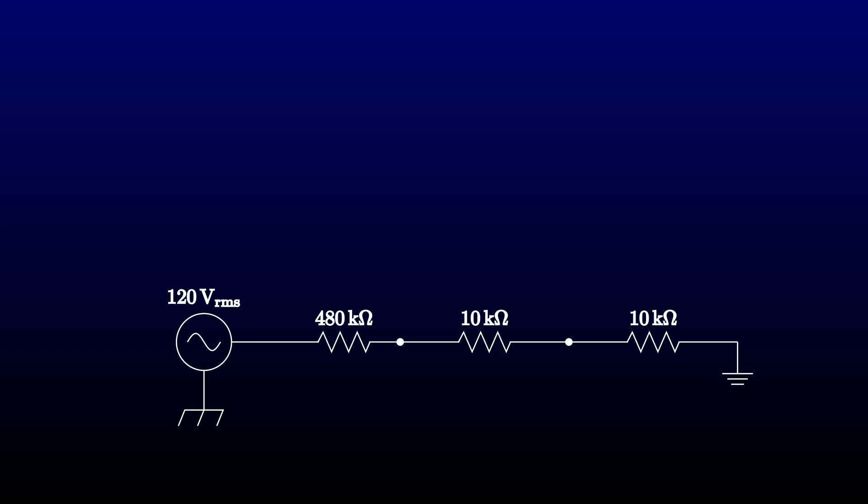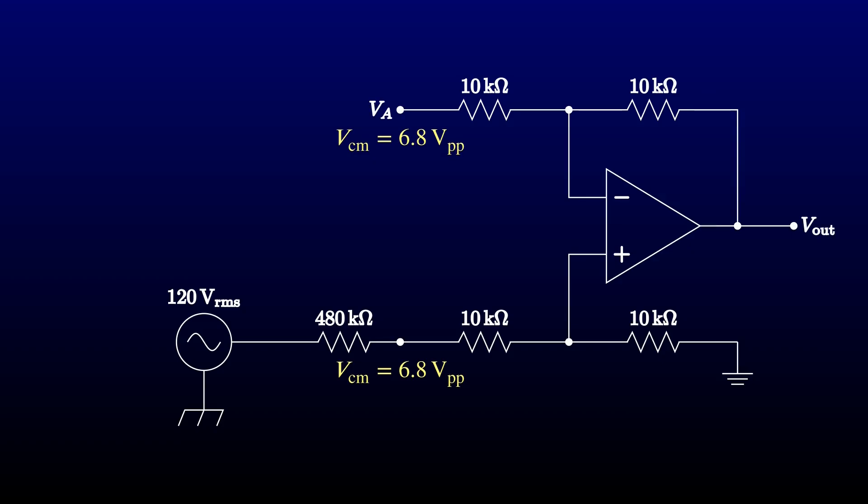So we could see up to 6.8 volts of common-mode signal at our input. Or our inputs, plural, I should say, since the same common-mode signal will appear at the other side of our circuit. So the common-mode voltage is balanced. What's the problem here?